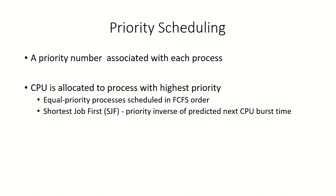In this video we will discuss the priority scheduling algorithm. In this algorithm a priority number is associated with each process, and whichever process has the highest priority, the CPU will be allocated to that particular process.